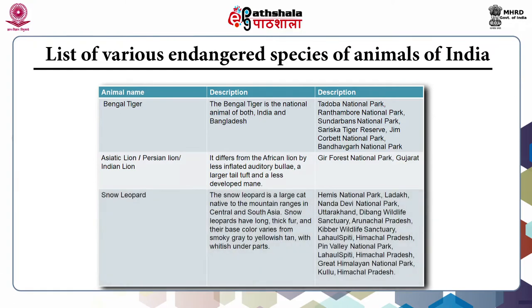The snow leopard is a large cat native to the mountain ranges of central and south Asia. Snow leopards have long, thick fur, and their base color varies from smoky grey to yellowish tan with whitish underparts. This animal is found in Hemis National Park in Ladakh, Nanda Devi National Park in Uttarakhand, Dibang Wildlife Sanctuary in Arunachal Pradesh, Kibber Wildlife Sanctuary and Pin Valley National Park in Lahaul-Spiti, Himachal Pradesh, and Great Himalayan National Park in Kullu, Himachal Pradesh.